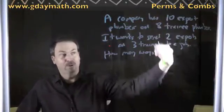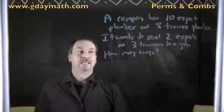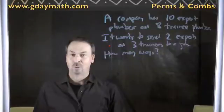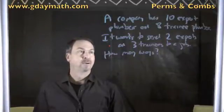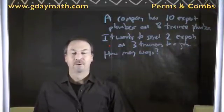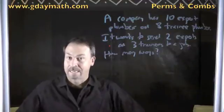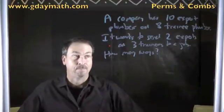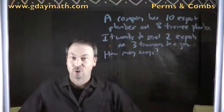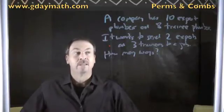I can read this problem and see there are actually two issues going on. Dealing with the expert plumbers — there are ten experts and I need to send two of them. And dealing with the trainees — there are eight trainees and I need to send three of them. So it's really two tasks at hand here. Task one: deal with the experts. Task two: deal with the trainees.